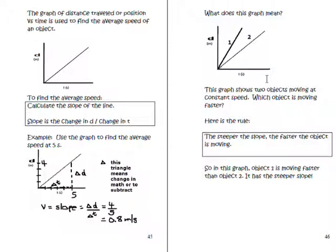Let's say we have two objects moving, one and two, represented here by the graph. Which one's moving faster? Well here's the rule: the steeper the slope, the faster the object. So in this case object one is moving faster than object two because it has the steeper slope.